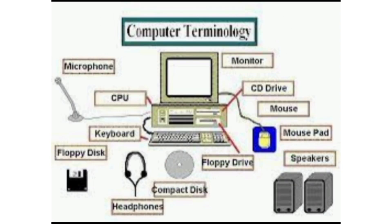Important computer terminology: Hardware refers to things we can physically touch — keyboard, CPU, floppy disk, microphone, monitor, CD drive, mouse, mouse pad, speakers, compact disc, headphones. Software refers to any application — for example, Microsoft, email, ArcView (a GIS software), or architecture software. These are all classified as software.